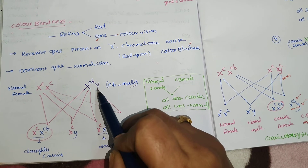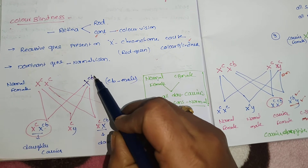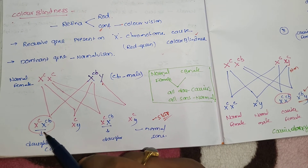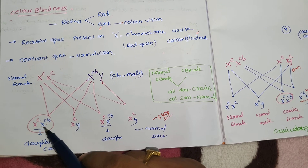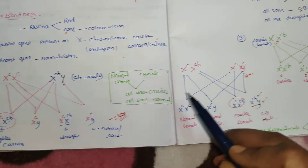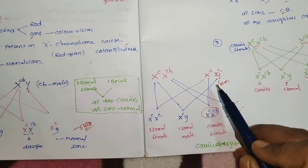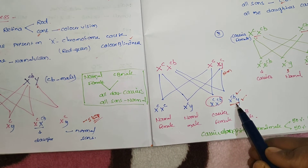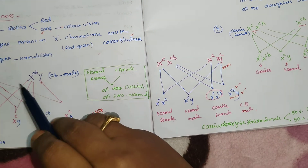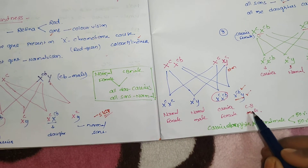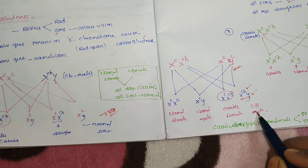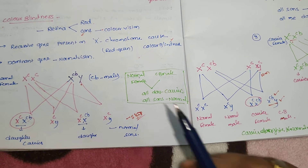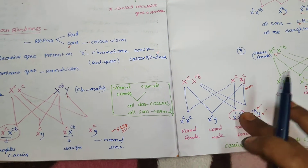The male parent has color blindness. The female daughter becomes a carrier. Then this carrier woman marries a normal male, and the character is expressed in their sons. So the pattern is: male parent to male grandchild through the female carrier daughter. That is crisscross inheritance.